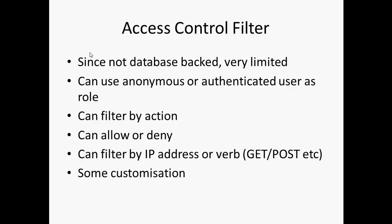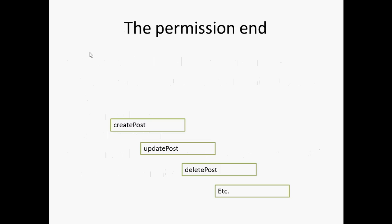You can also filter by IP address or by the request verb — for example, saying that people are not allowed to call a certain action using GET, only POST. There is some customization available with callback functions for when a rule is actioned and for deciding whether the rule should be used at all. The system goes down the rules in order, and the first rule that matches — based on whether the user is anonymous or authenticated and what action they're requesting — will dictate whether they are allowed or denied, even if a later rule says something different.